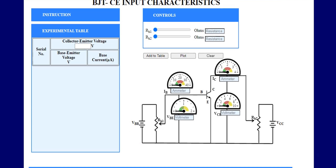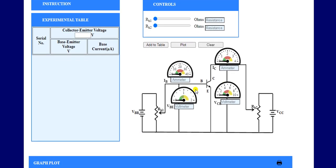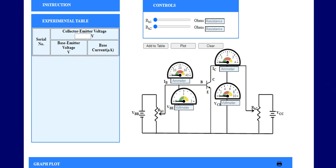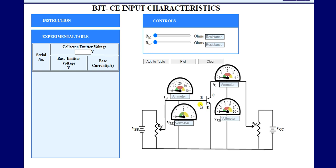This is the circuit diagram of bipolar junction transistor in common emitter configuration. For the common emitter configuration, the emitter terminal is common between base-emitter and collector-emitter. The terminal base and emitter is used for the input side, and across collector and emitter we take our output. That's why it is called common emitter configuration — because the emitter is common to both input and output.